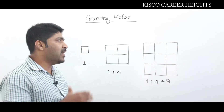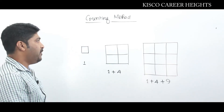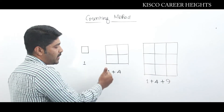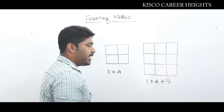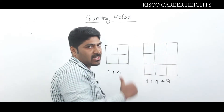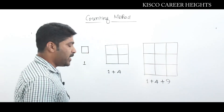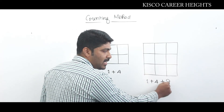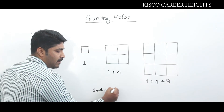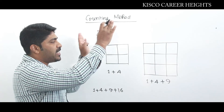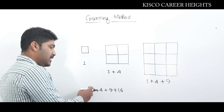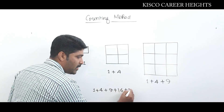Observing the pattern: a one-by-one grid has exactly one square; a two-by-two grid has one plus four squares; a three-by-three grid has one plus four plus nine squares. Extending this, a four-by-four grid gives one plus four plus nine plus sixteen, and a five-by-five grid gives one plus four plus nine plus sixteen plus twenty-five, and so on.